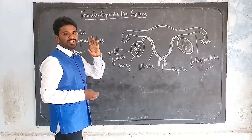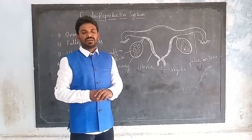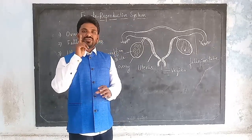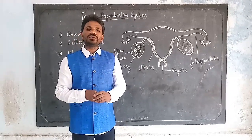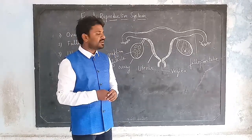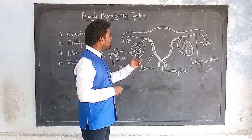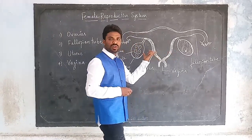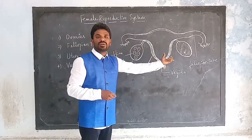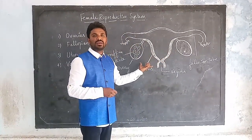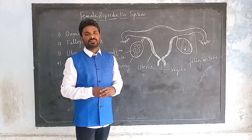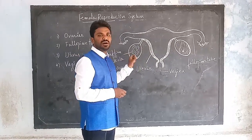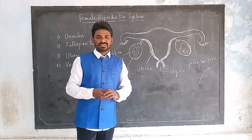First, ovaries. Ovaries are female sex organs. There is one pair of ovaries located in the abdominal cavity. These ovaries are female sex organs.